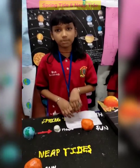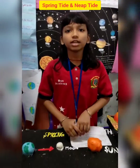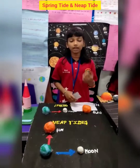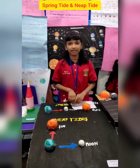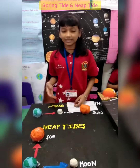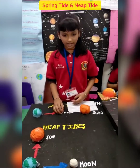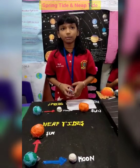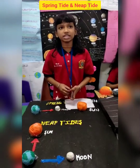Tides are controlled by the gravitational pull of the moon as it orbits the earth. There are two extremes of the tide: Spring Tide and Neap Tide. Spring Tide is also called the King Tide.